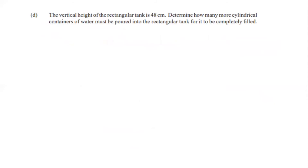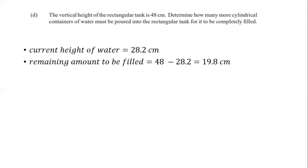Part D says: the vertical height of the rectangular tank is 48 cm. Determine how many more cylindrical containers of water must be poured in for the tank to be completely filled. The current water height is 28.2 cm. So the remaining height to be filled is 48 minus 28.2, which equals 19.8 cm.